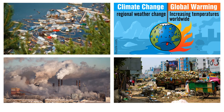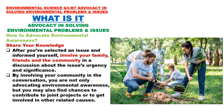The list of issues surrounding our environment goes on, but there are three major ones that affect the majority overall. The first is global warming and climate change. The second is water pollution and ocean acidification. And the third is the loss of biodiversity. After you've selected an environmental issue and informed yourself about it, involve your family, friends, and the community in a discussion about the issue's urgency and significance. By involving your community in the conversation, you are not only advocating environmental awareness, but you may also find chances to contribute to joint projects or get involved in other related causes.